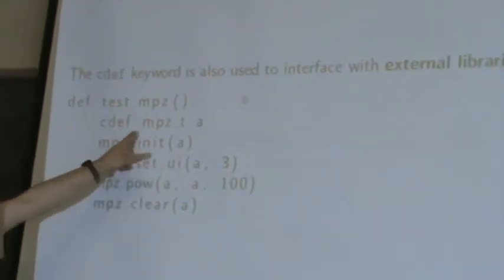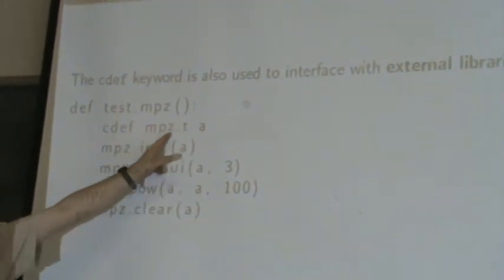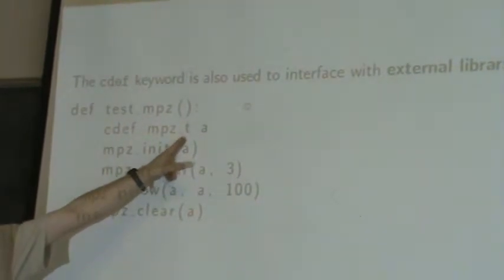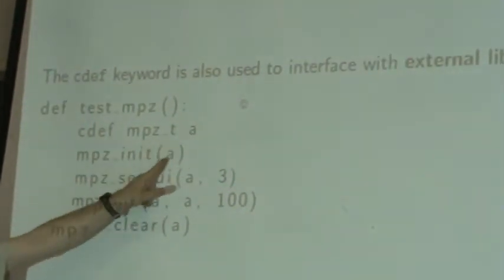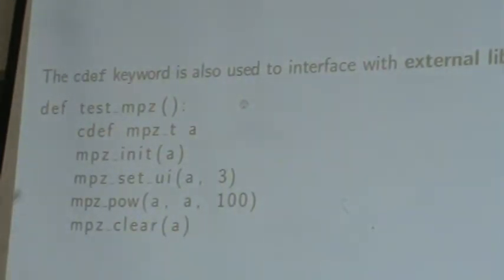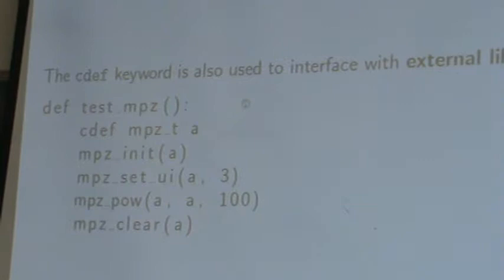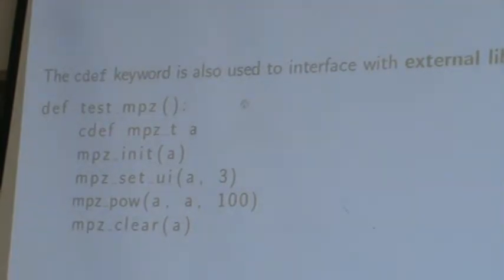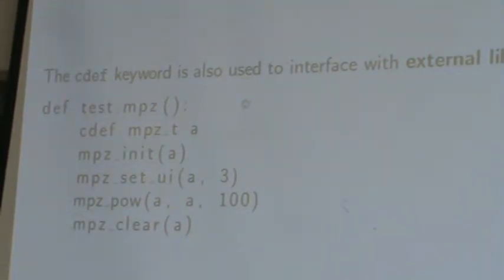This type here is the arbitrary precision integers. So I can declare this and then I use these functions here as if they were Python functions. Actually, should have a block above that declares where these functions are. But this is an example of using an external library.